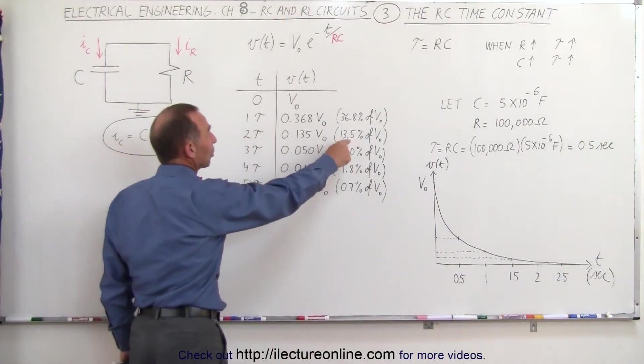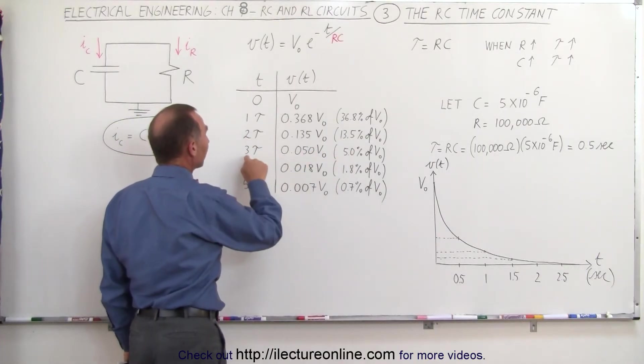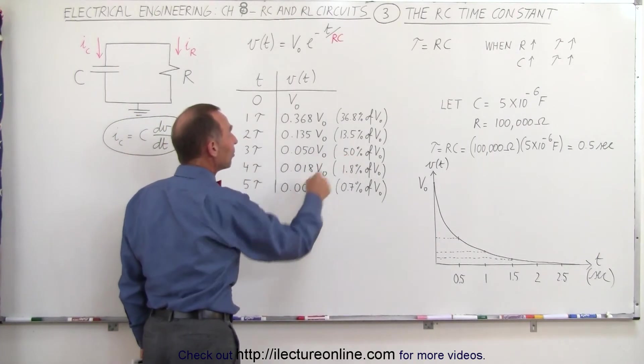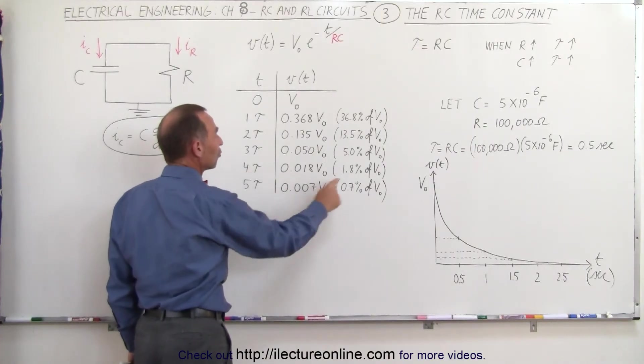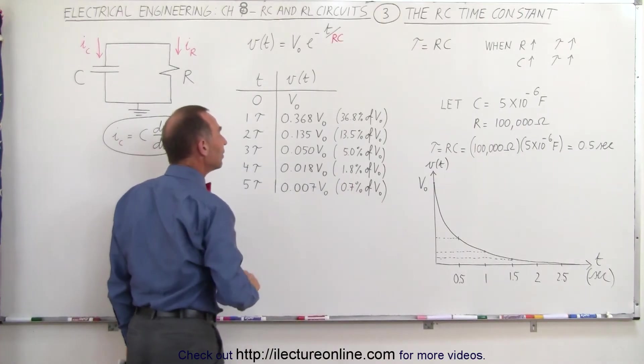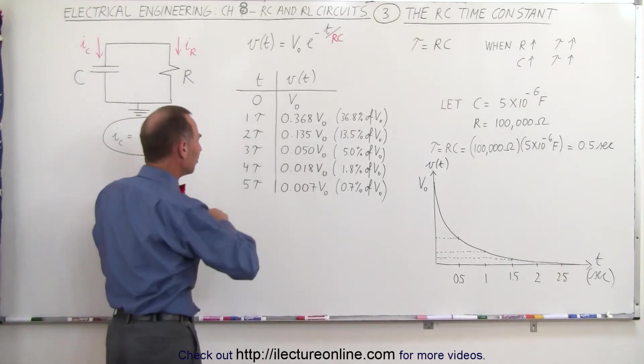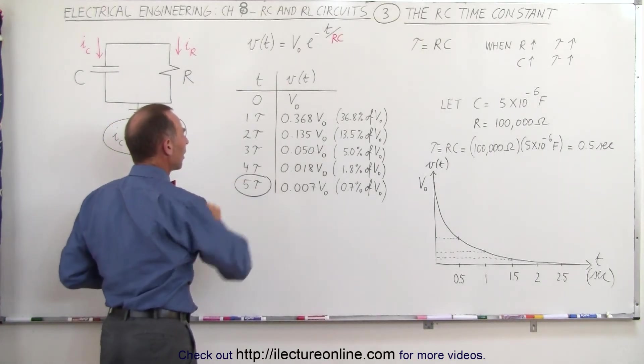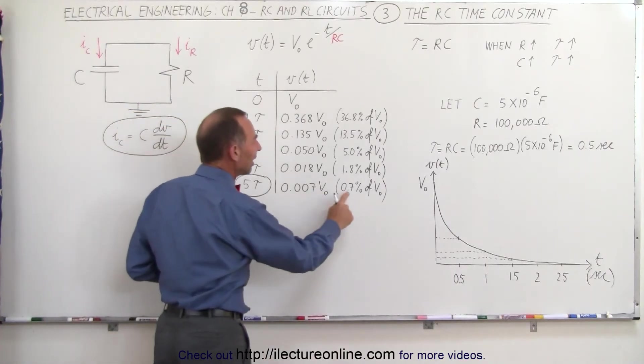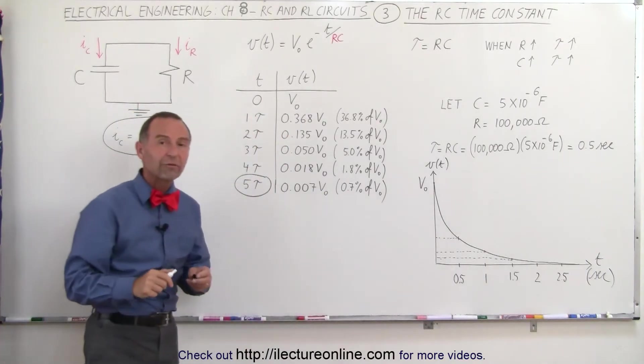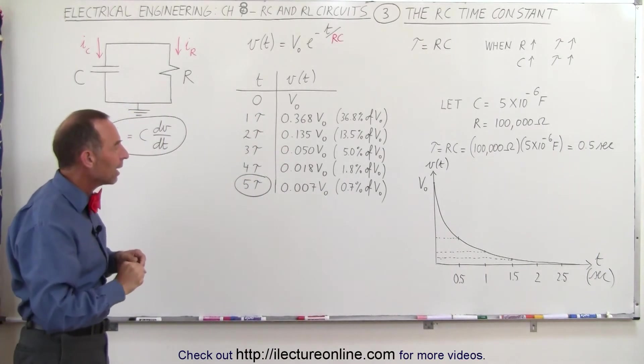After two time constants, it's dropped to 13.5%. After three time constants, it's dropped to 5%. After four, it has dropped to 1.8% of the initial value. And finally, after five time constants, the voltage across the capacitor has dropped to less than 1% of its initial value, the initial value of V sub naught.